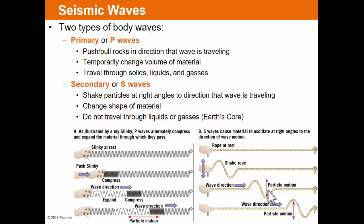P waves have push and pull — like a slinky, they compress and expand, temporarily changing the volume of the material. Because they change volume, primary or compressional waves can travel through solids, liquids, and gases — much like sound waves. But the secondary wave is not compressional; it's a shear wave that moves back and forth or up and down. It changes the shape — not the volume — of the material, and that type of wave does not travel through liquids or gases.